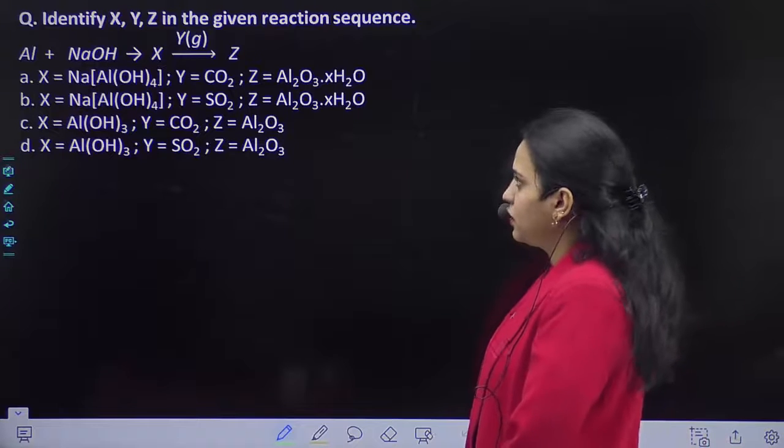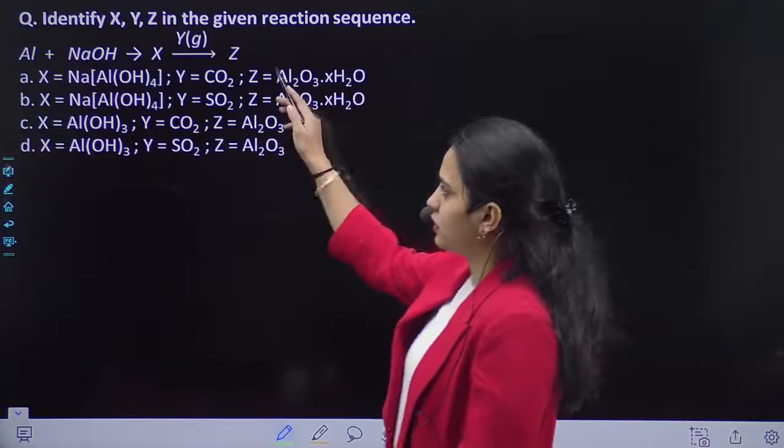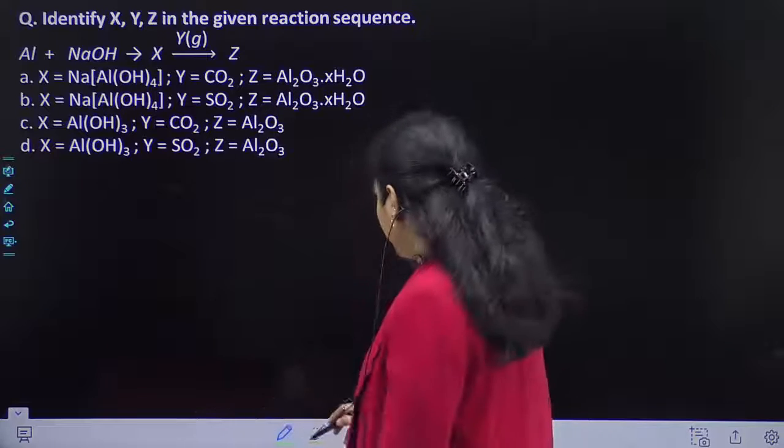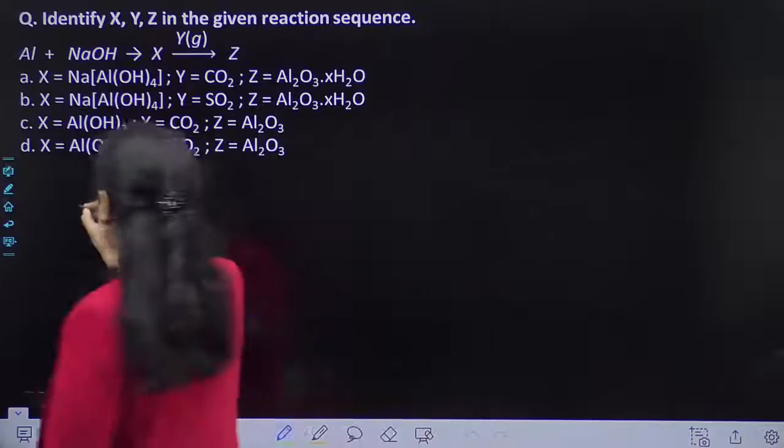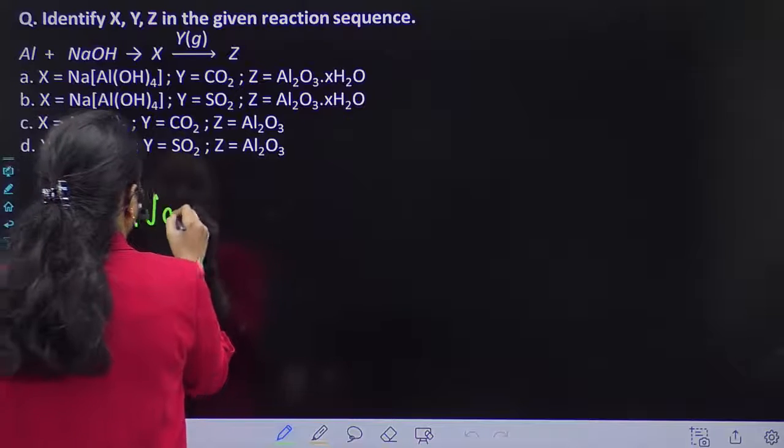So you have to tell what is X and what is Y and what is Z. So Aluminium jab NaOH ke saath mein react karta hai, Aluminium plus NaOH,